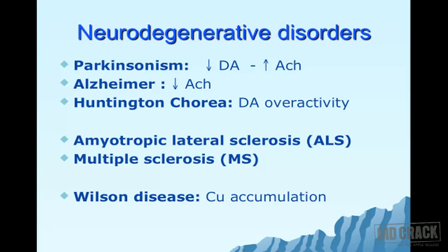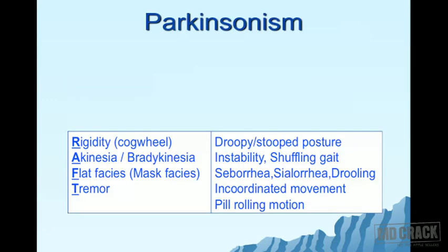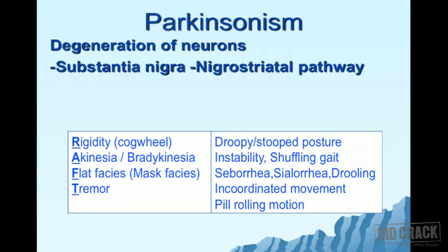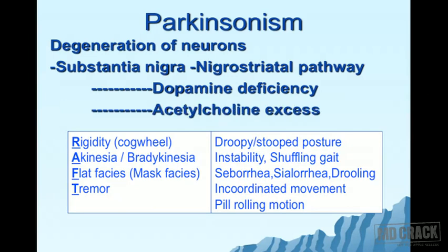Let's start with Parkinson's. The pathology involves degeneration of neurons in the substantia nigra and the nigro-striatal pathway, leading to dopamine deficiency and acetylcholine excess. Classical symptoms include cogwheel rigidity, akinesia or bradykinesia, flat or mask facies, and tremor. Other symptoms include droopy or stooped posture, instability, shuffling gait, seborrhea, sialorrhea, and drooling.